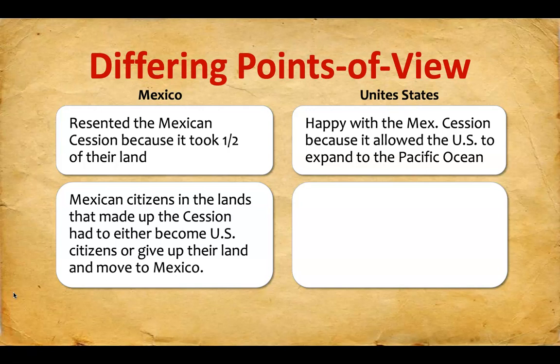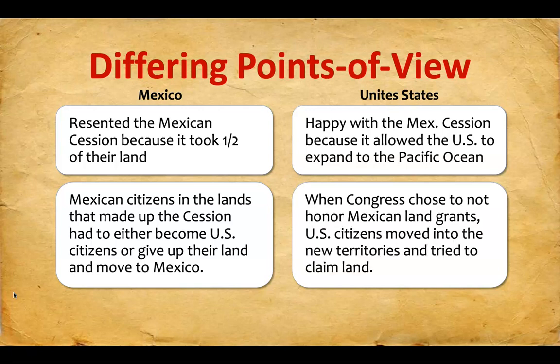Mexico also did not like the fact that Mexican citizens in the lands that made up the Cession had to either become U.S. citizens or give up their land and move to Mexico. U.S. citizens loved this. When Congress chose not to honor Mexican land grants, U.S. citizens moved into these new territories and tried to claim land that had been owned by Mexican citizens before the war and before the Treaty of Guadalupe Hidalgo.